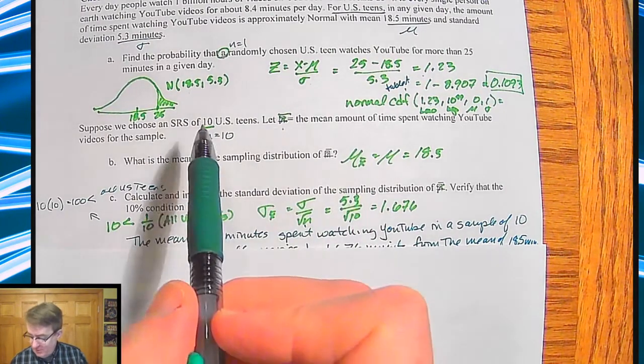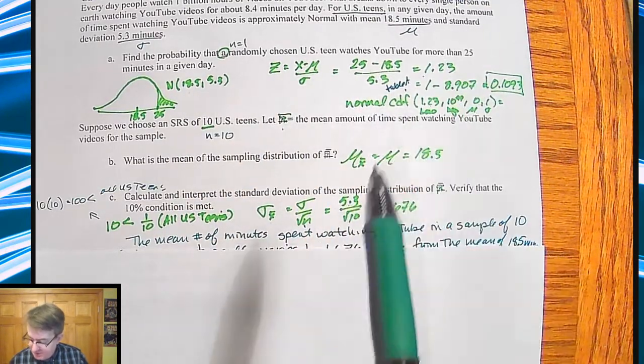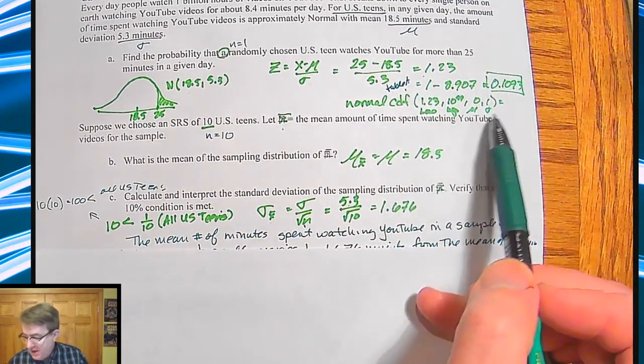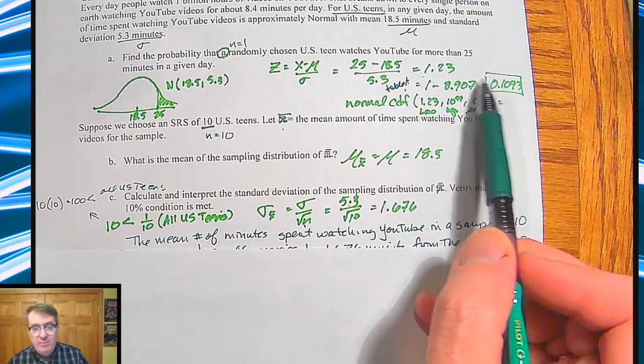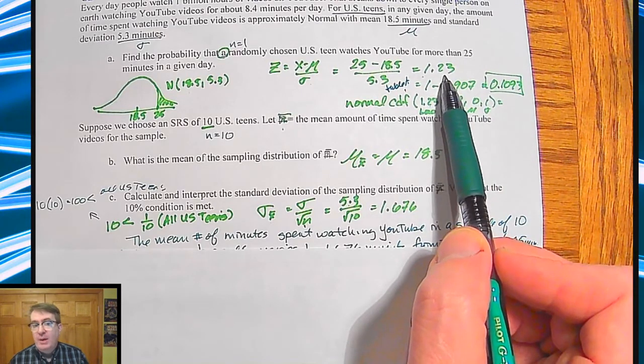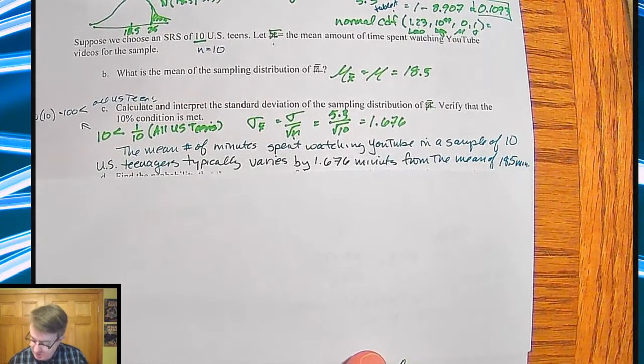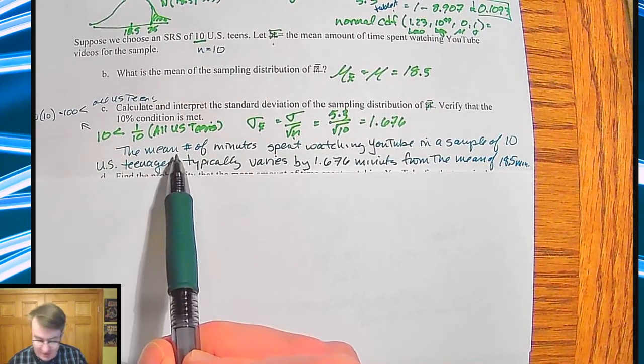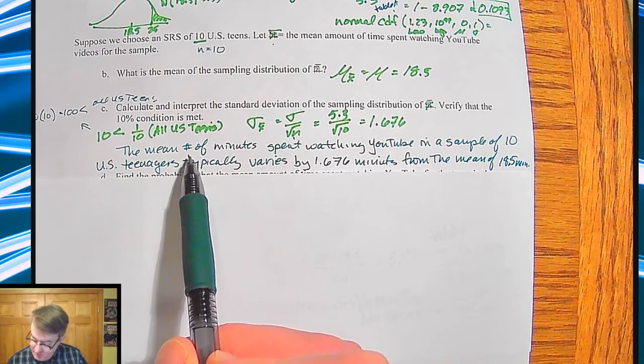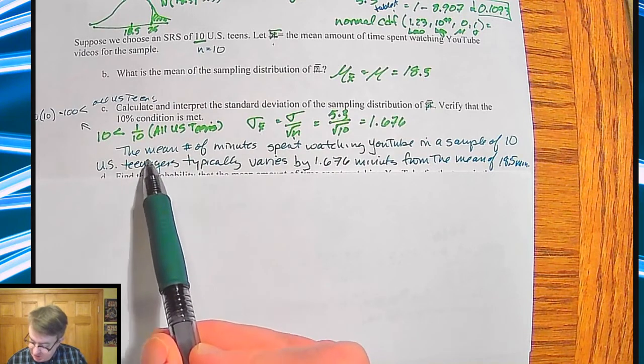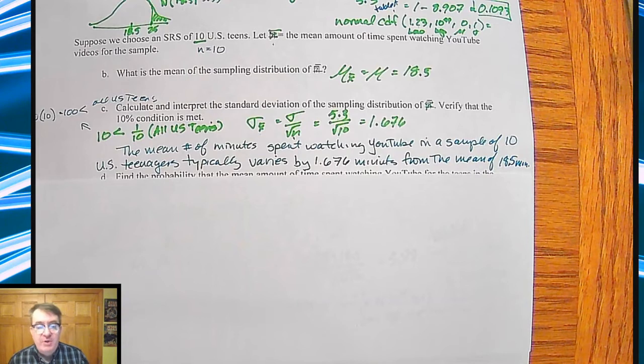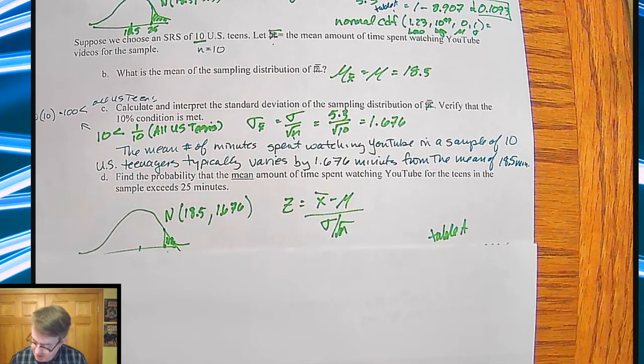So if you think about what's going to happen, that should start, and we're going to eventually ask about this 25 minutes or more again. And that's going to drive this number up because the Z value should go up. So anyway, foreshadowing, I guess. The interpretation here is the mean number of minutes spent watching YouTube in a sample of 10 U.S. teenagers typically varies by 1.676 minutes from the mean of 18.5 minutes.